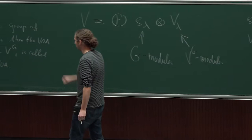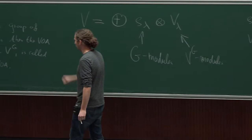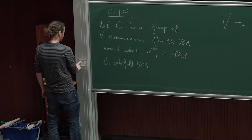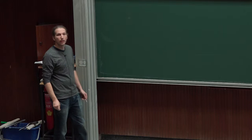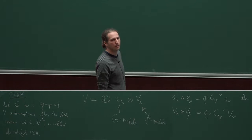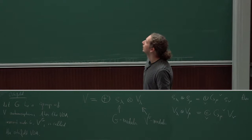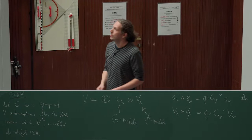Would it be possible to see maybe an example starting from the free boson or something like that? Yes, let's do an example of a free field algebra. Just before you do the example, could you explain why you can decompose V in this way? It's not pretty obvious to me — why you can write a module as a V^G module?